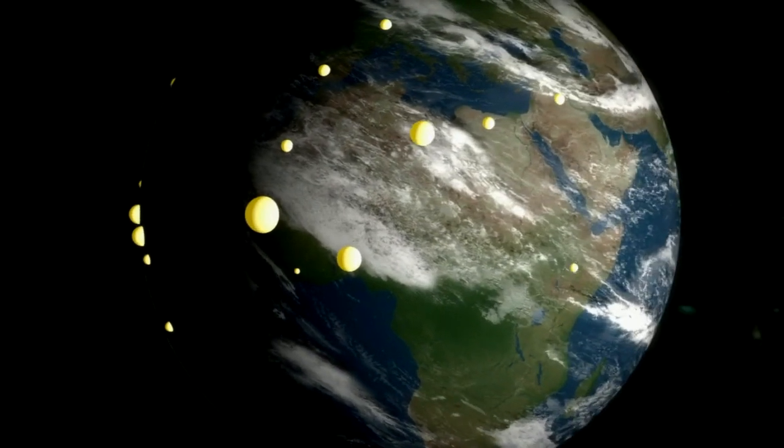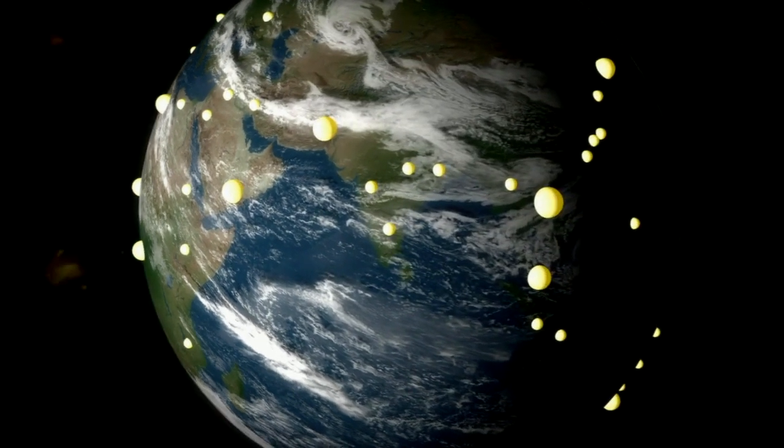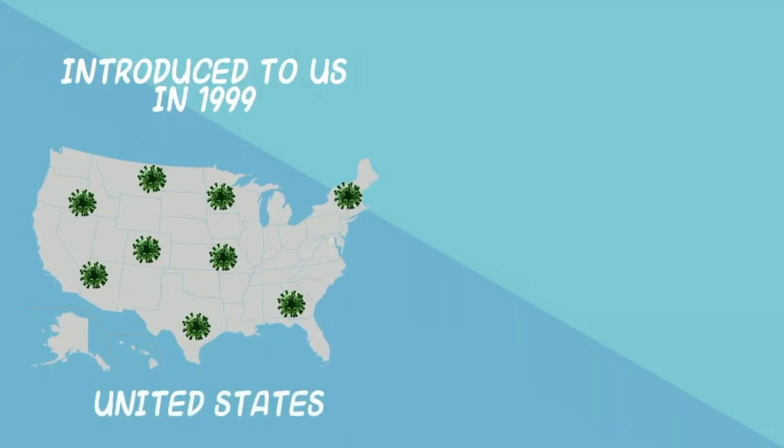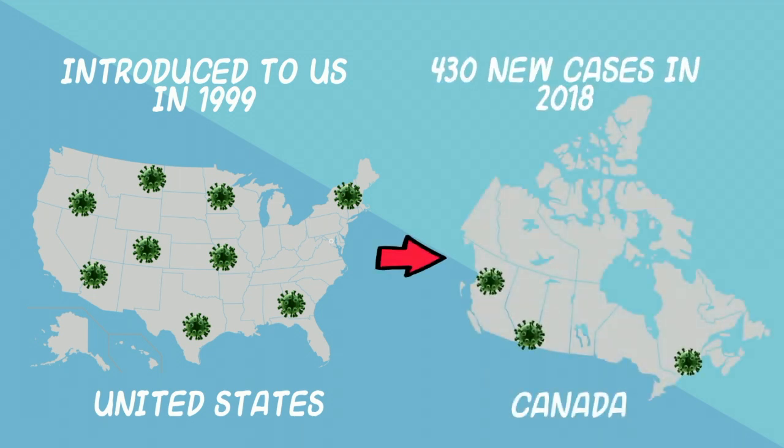Originating in the West Nile district of Uganda in 1937, there have been multiple large outbreaks of the virus around the world, highlighting the dangers and concerns for vector-borne pathogens. Since its introduction to the U.S. in 1999, West Nile has spread to become widely prevalent in Canada, with approximately 430 new cases in 2018.